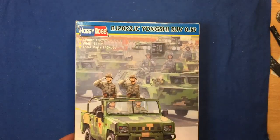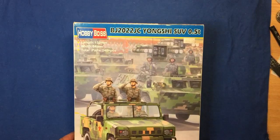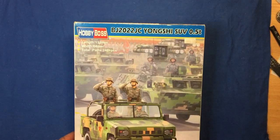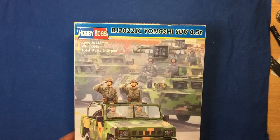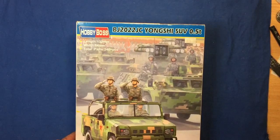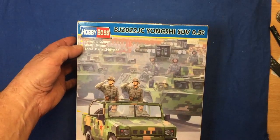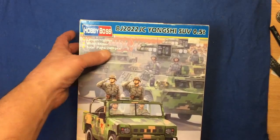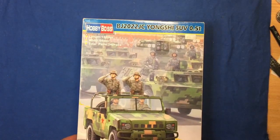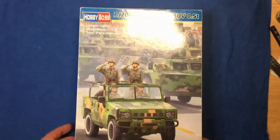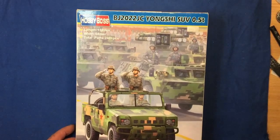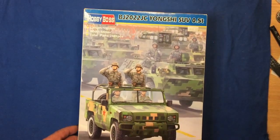It's actually the BJ2022JC Yongxi SUV 0.5 tonnes. It's made by Hobby Boss. It's 132mm long, 64mm wide and it says 240 plus parts. And I've just had a quick look through the box and it's quite an interesting little kit. It's like a Chinese Hummer, if you like.